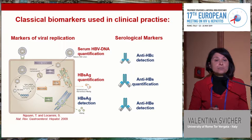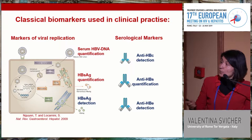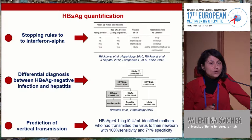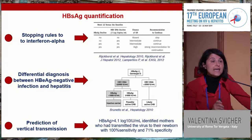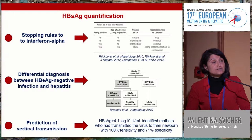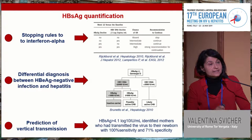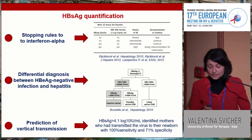Another important biomarker is quantitative HBsAg. Quantitative HBsAg has been used to set up stopping rules for interferon-alpha and plays an important role in HBeAg-negative and low-viremic patients, since it allows differentiation between HBeAg-negative infection and HBeAg-negative hepatitis. Furthermore, quantitative HBsAg has been shown to predict the risk of vertical transmission and can help identify pregnant women as candidates for antiviral treatment.